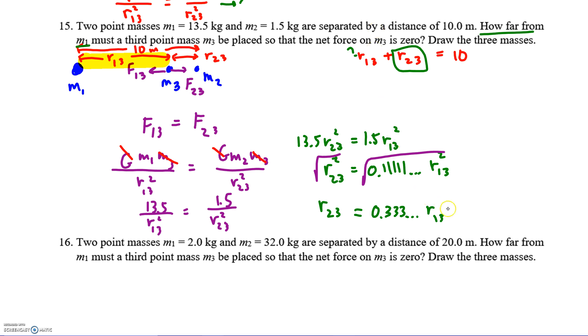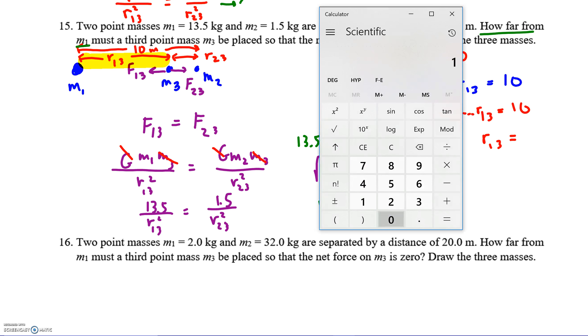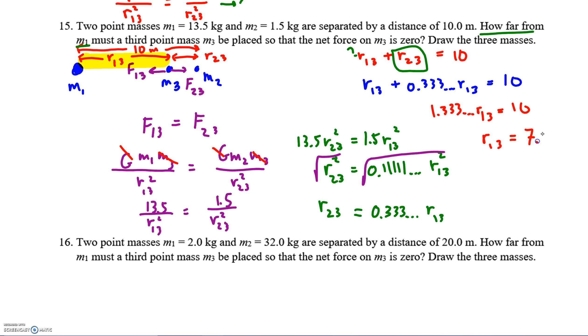Right up here, now I know what I can plug in for R23. I have R13 plus 0.3 repeating R13 equals 10. So if I have one of them and then a third of them, what's the total amount that I have? I have one and a third. So then I divide both sides by the 1.3 repeating. This is going to be 10 over 1.3 repeating, 7.5.